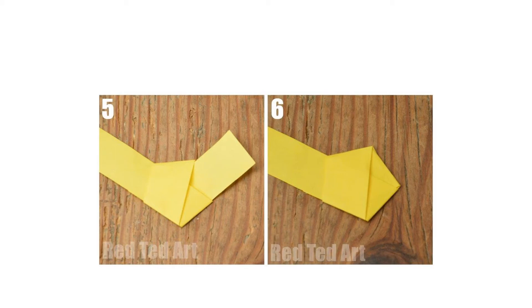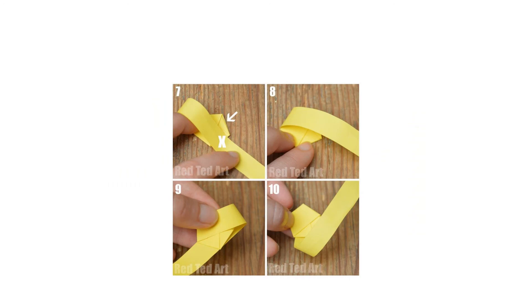You are now ready to start wrapping your origami lucky star. This step looks confusing at first, but really it's so easy. You basically start wrapping your paper round and round.